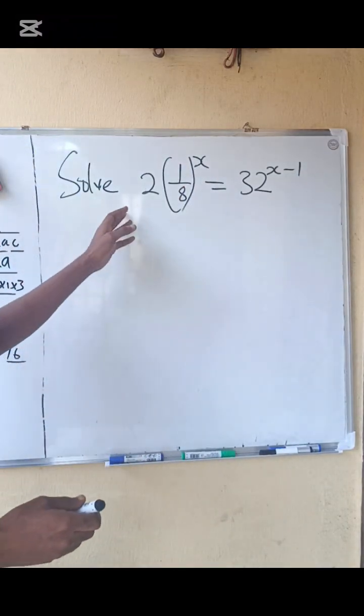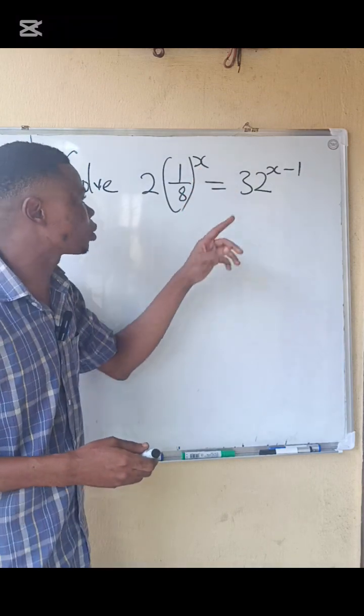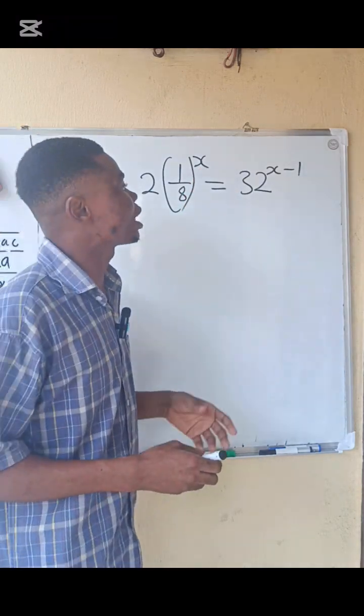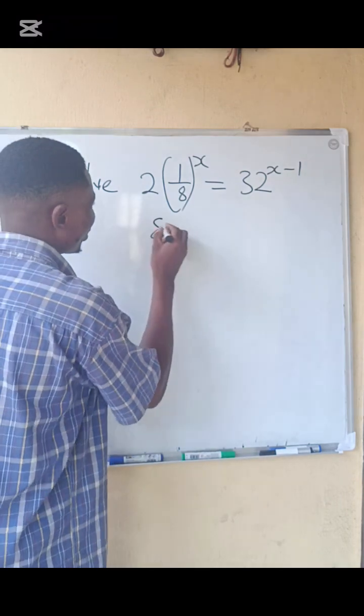We are asked to solve 2 into 1 over 8 raised to the power of x equals to 32 raised to the power of x minus 1. We are to find the value of x. Let's go to the solution.